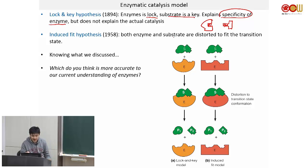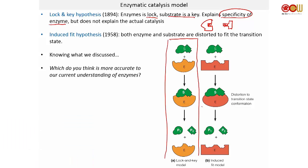Looking at the diagram, the lock-and-key model says the enzyme has a complementary shape to the substrate, so only that substrate can bind and form the ES complex. Then somehow the reaction is catalyzed, cutting the substrate into P1 and P2. This model is good for explaining enzyme specificity, but it does not tell you what happens during catalysis — it's just magic. So that's not exactly right.